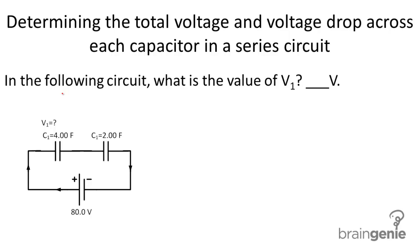We're going to break this down into different steps. The first step is determining the equivalent capacitance, and we get that from the equation 1 over CS equals 1 over C1 plus 1 over C2.